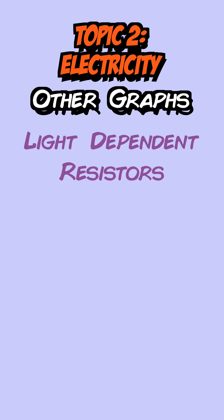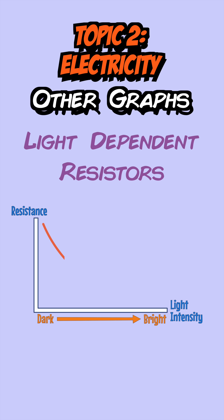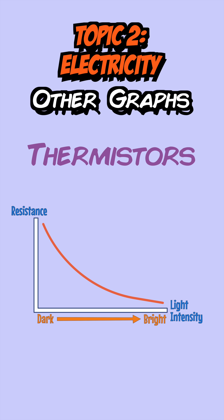Other graphs include the one for light dependent resistors, where their resistance decreases as the light intensity of the surroundings increases. Similarly, we have thermistors, but these decrease their resistance when the temperature of the surroundings increases.